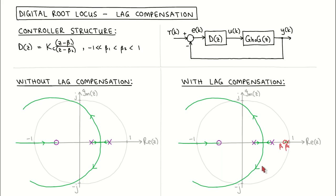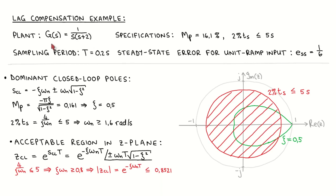To illustrate lag compensation, let's work through an example. The plant for this example is given by the continuous time transfer function one divided by s times s plus two. The sampling period we should use is 200 milliseconds. The transient specifications are that the step response should have an overshoot of 16.1 percent and a two percent settling time of less than or equal to five seconds.